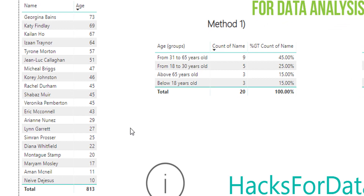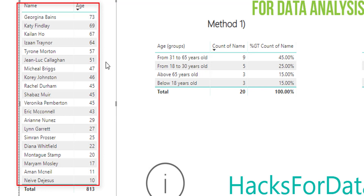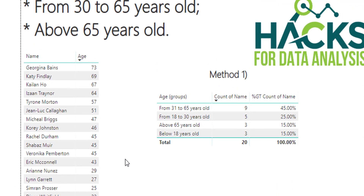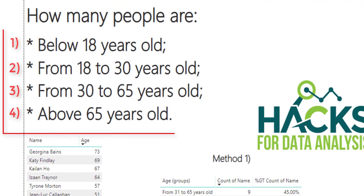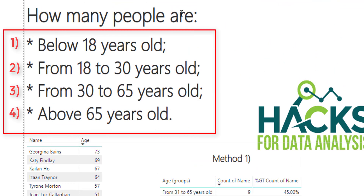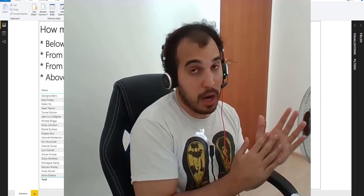So here we have a list of names and the age of each person. What we want to understand is how many people are below 18 years old, from 18 to 30 years old, from 30 to 65 years old, or above 65 years old. So we are grouping people into those age categories.